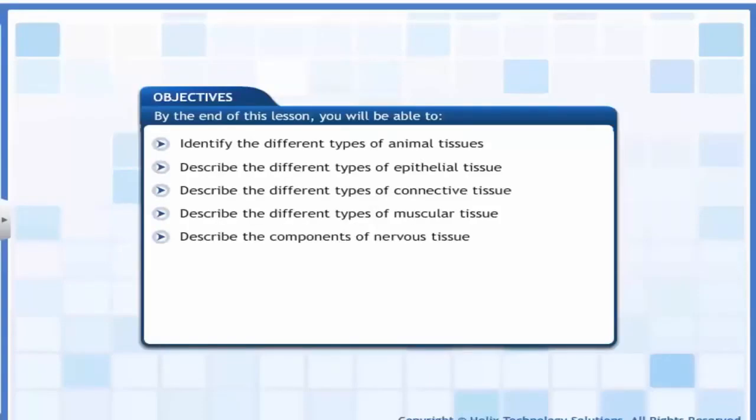By the end of this lesson you will be able to identify the different types of animal tissues, describe the different types of epithelial tissue, describe the different types of connective tissue, describe the different types of muscular tissue, and describe the components of nervous tissues.